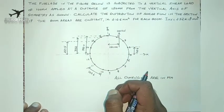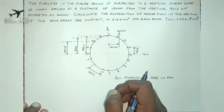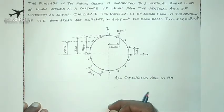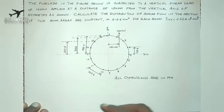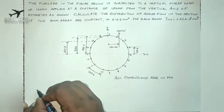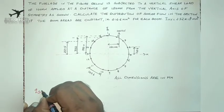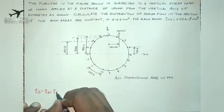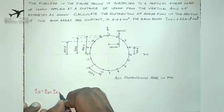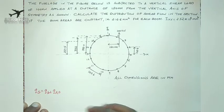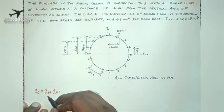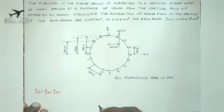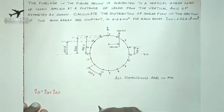We are aware that this section is a closed section. To find out the value of shear flow for a closed section, we have the general formula QS is equal to QB plus QS naught. QB is the basic shear flow and QS naught is the shear flow where we make a cut.